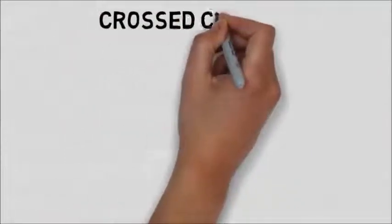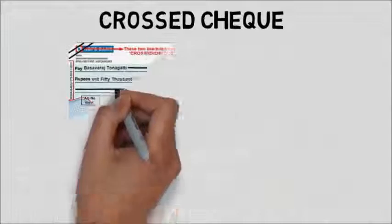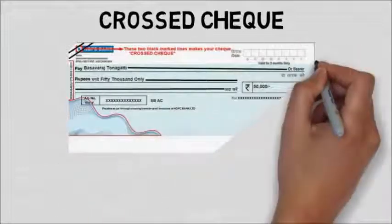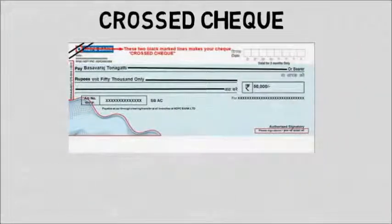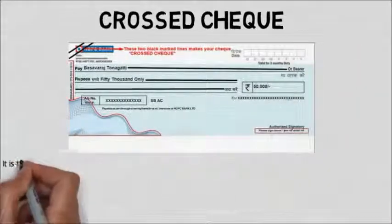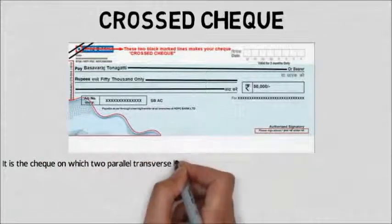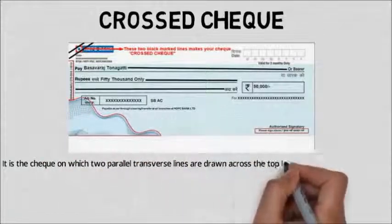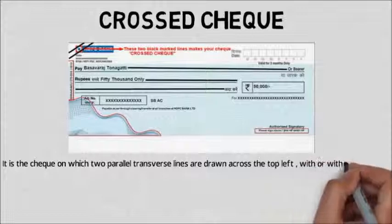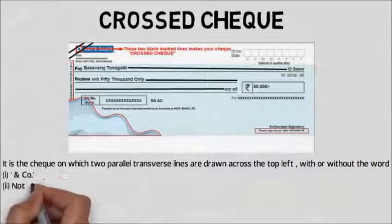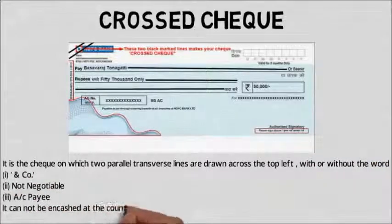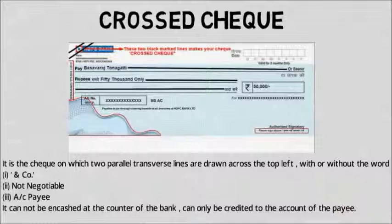The second type of check is the cross check. It is a check in which two parallel transverse lines are drawn across the top left corner, with or without words like 'and company,' 'not negotiable,' or 'account payee.' It cannot be encashed at the counter of the bank and can only be credited to the account of the payee.